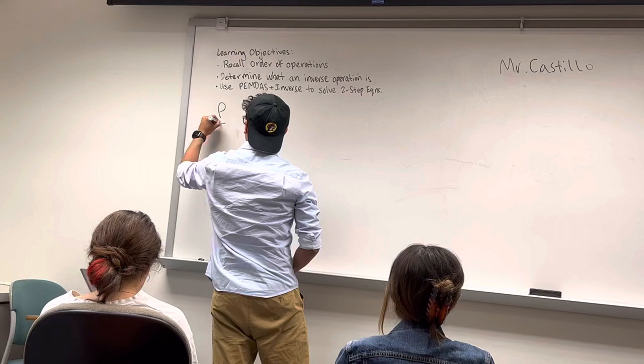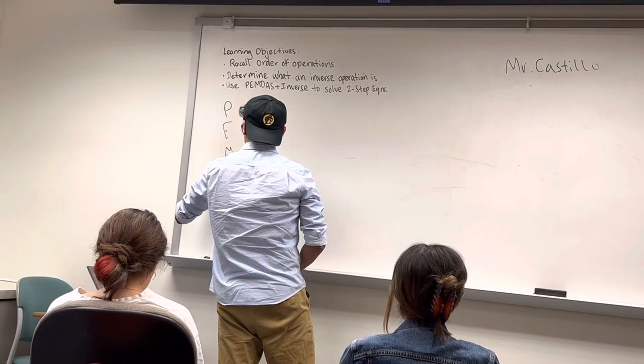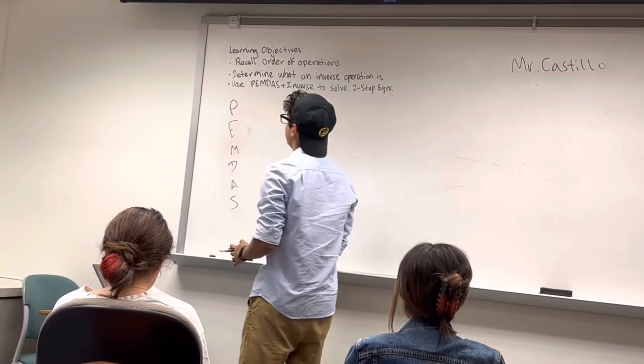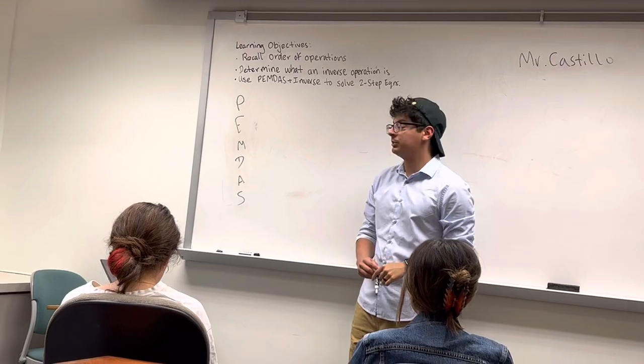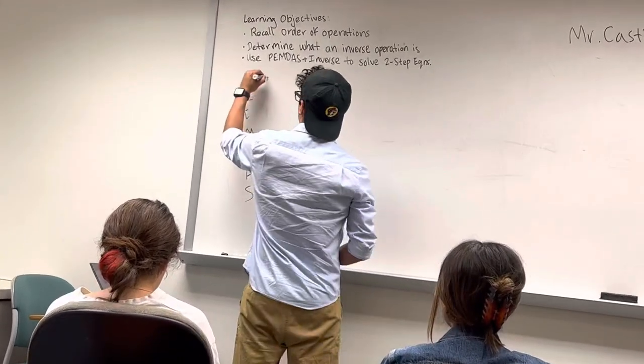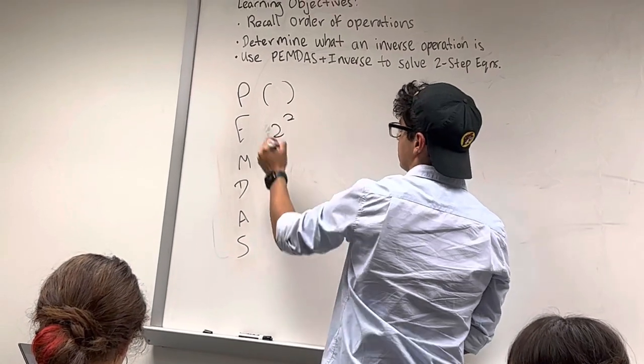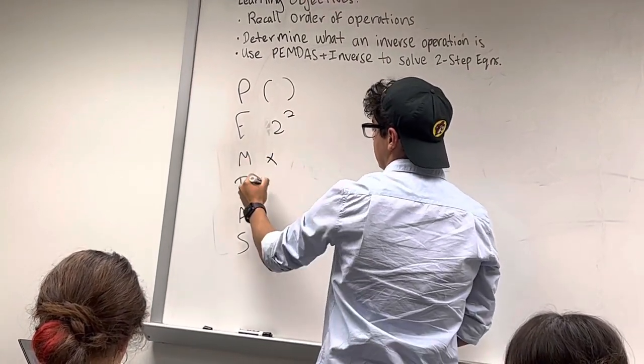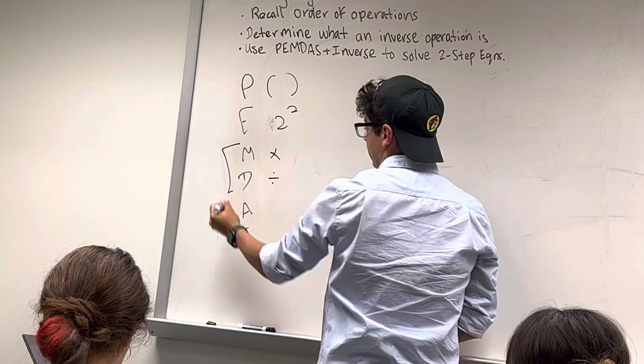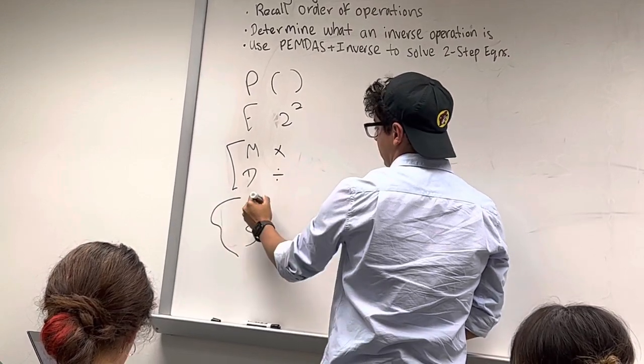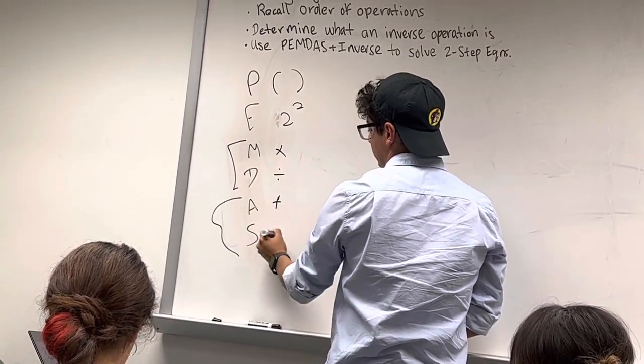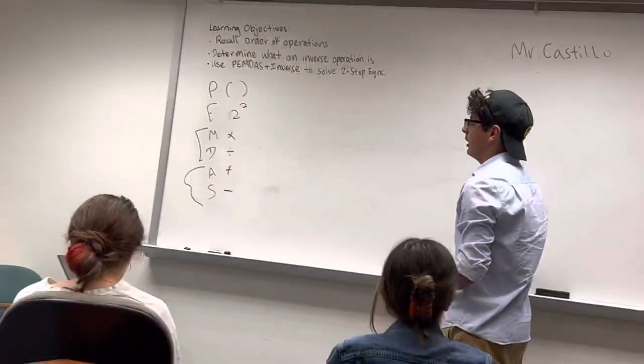So first we're going to talk about PEMDAS. PEMDAS is an acronym that helps us remember the order of operations in which we solve an equation. First we start off with parentheses, then we have exponents, then we have multiplication and division, and these go together. Then we have addition and subtraction, and these also go together.